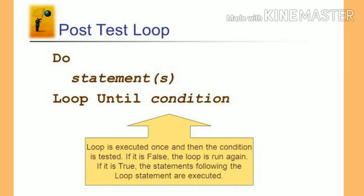The last one is do loop until statement. Do loop until statement first executes the statement and then the condition. This means it will be executed at least once. The syntax for do loop until is: do statements, loop until condition. Here, the loop is executed once then the condition is tested. If it is false, the loop runs again. If it is true, the statements following the loop are executed.